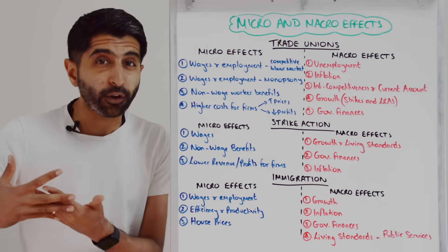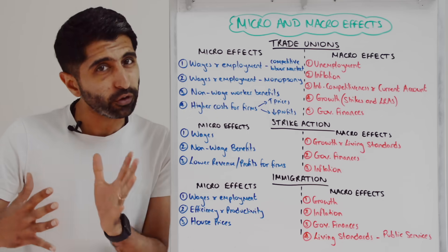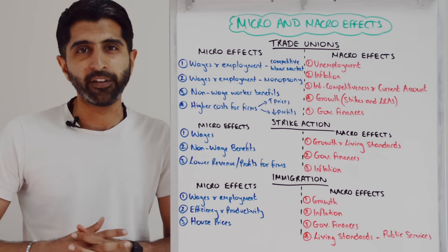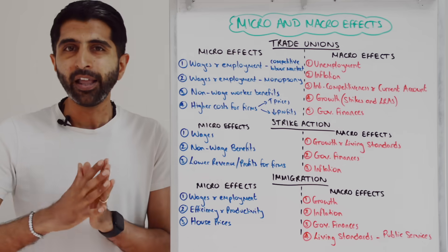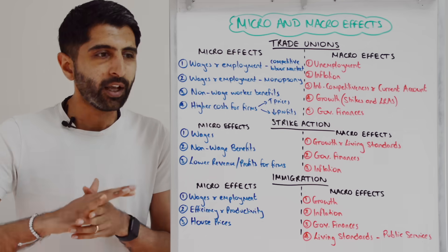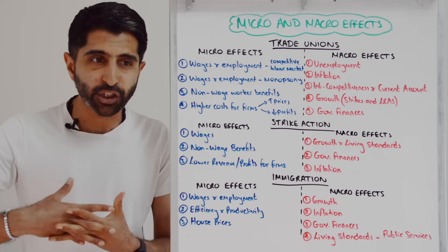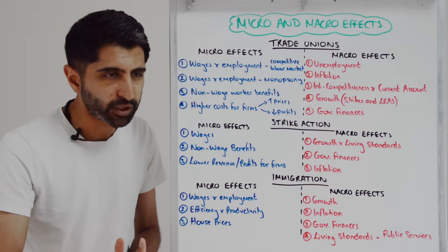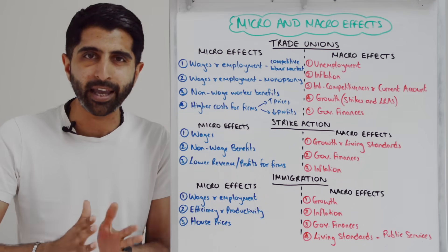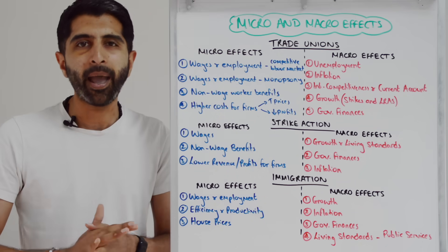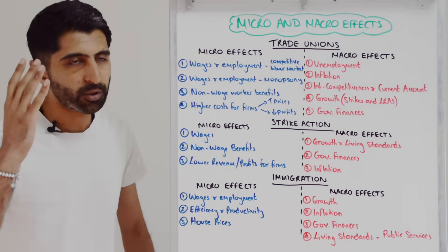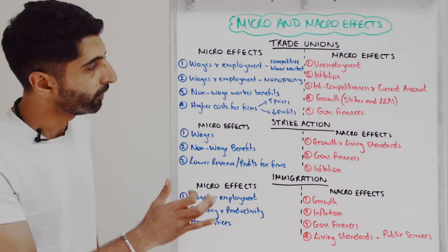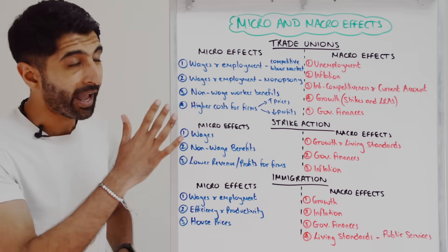Trade unions can also fight not just for higher wages but also for non-wage benefits for workers. For example, fighting for tighter hiring and firing regulation, greater job security, maternity and paternity leave, sick pay, holiday pay, holiday leave, and pension plans — all that kind of stuff as well. Non-wage benefits for workers there.